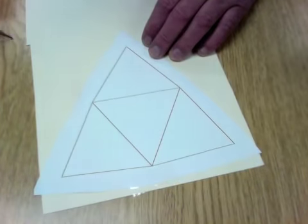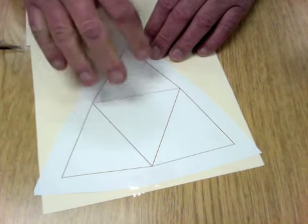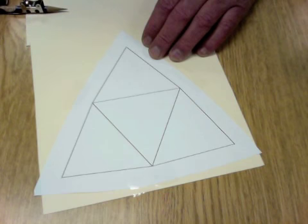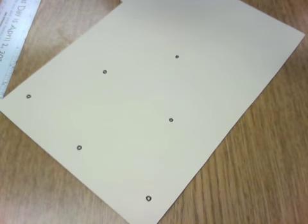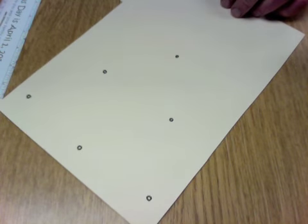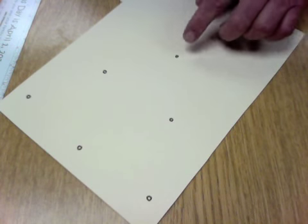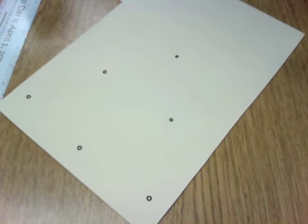All right, once you've got that done, go ahead and remove this piece of paper from the file folder material. Now I've removed that pattern, and I have, so you can see it, I've circled each of the six little holes that the compass point created.